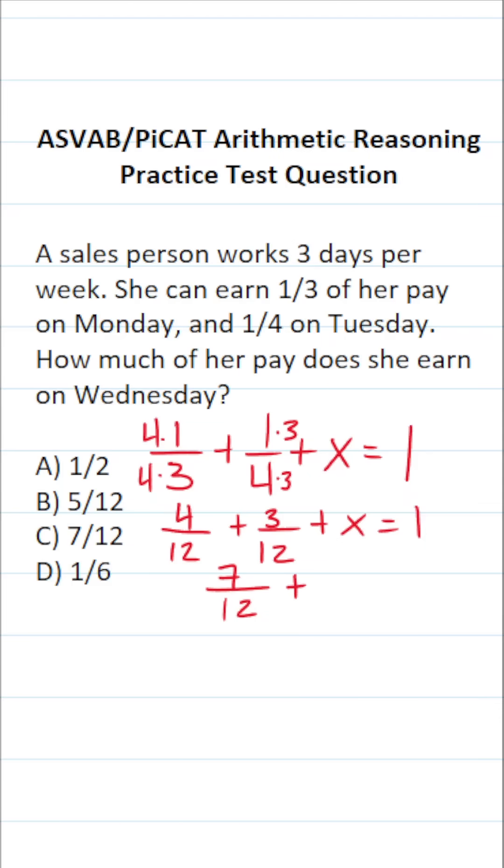To get X by itself, we're going to subtract seven-twelfths from both sides of the equation. In doing so, this crosses out, leaving us with X equals one minus seven-twelfths. Now, to make this very easy to do, I'm going to rewrite one such that it has a denominator of 12. And how can I do that? Well, one is the same thing as 12 divided by 12. 12 divided by 12 is one. So this becomes 12 over 12 minus 7 over 12.